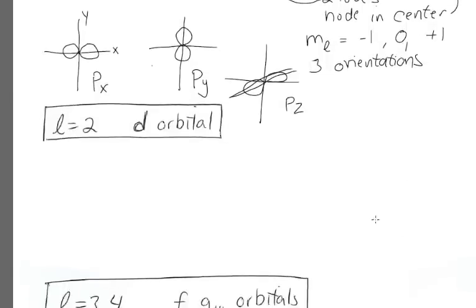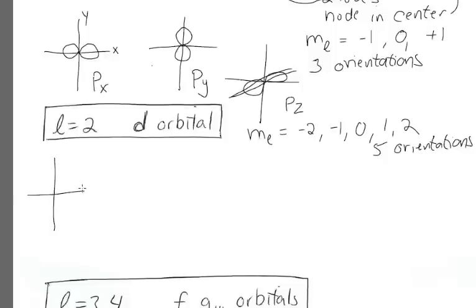Next we have l equals 2, and that's a d orbital. And those have m sub l values of, you may remember, negative 2, negative 1, 0, 1, and 2. So it has five possible orientations. And we draw those five orbitals like this. Let's do our x, y axis again. And these d orbitals have even more lobes.